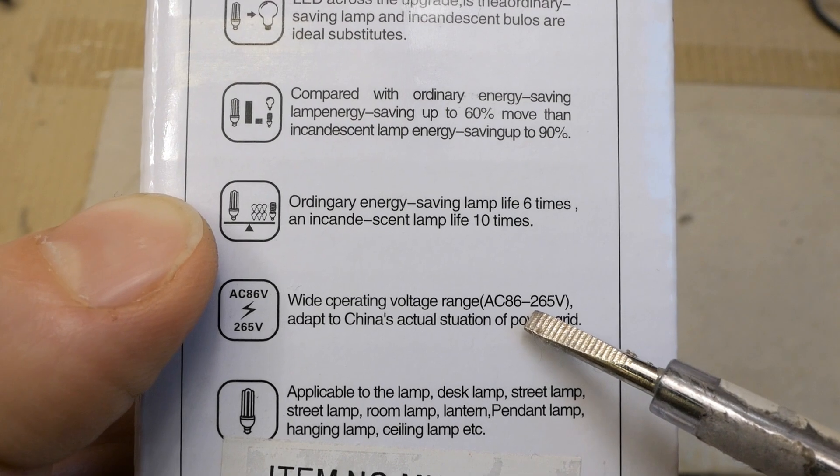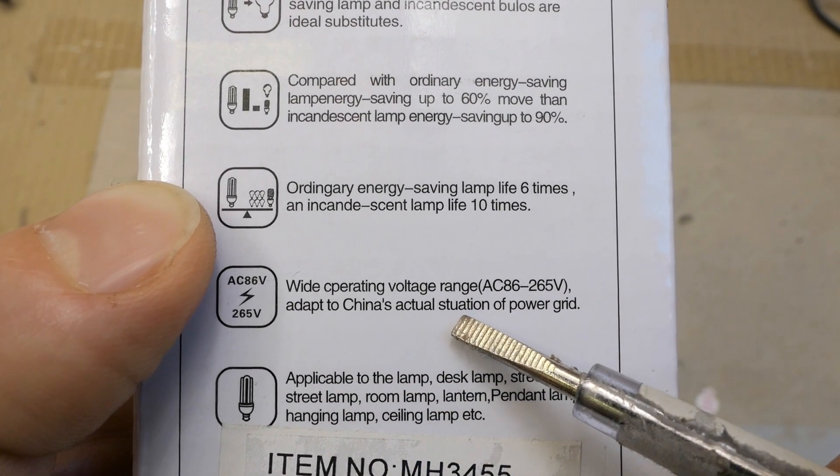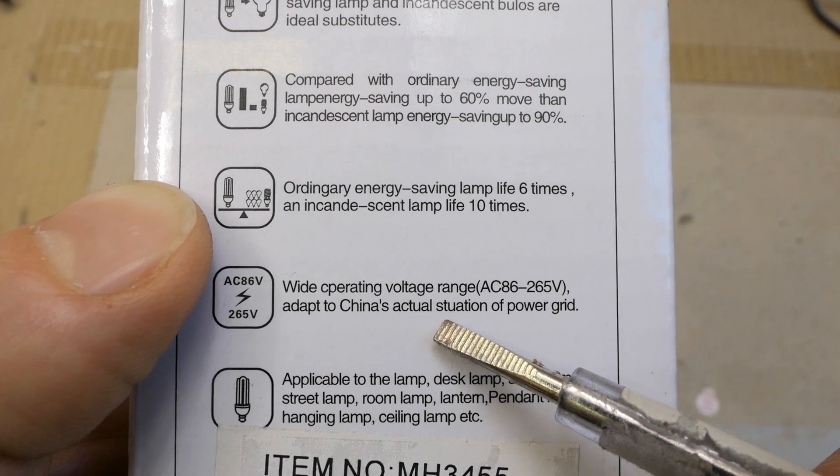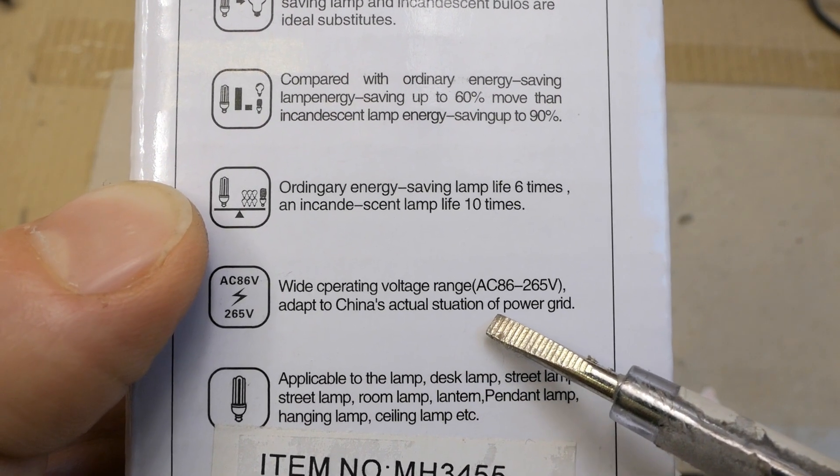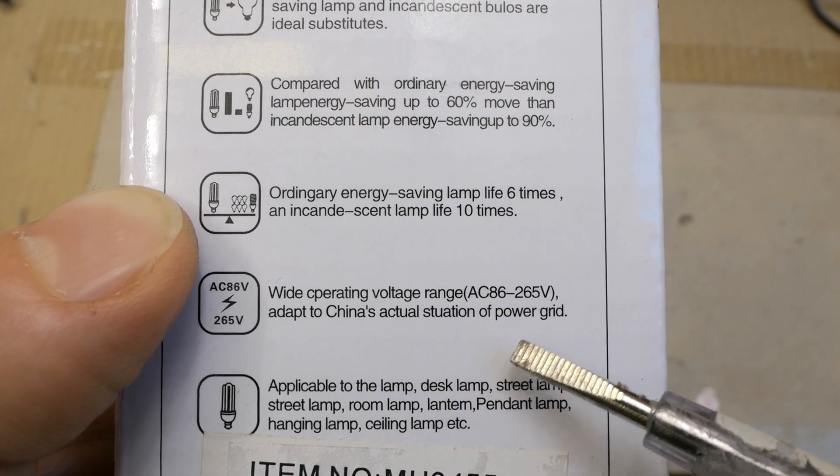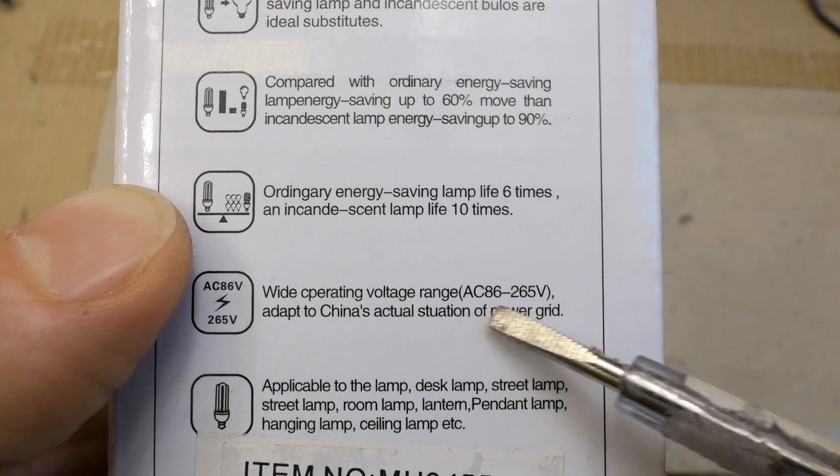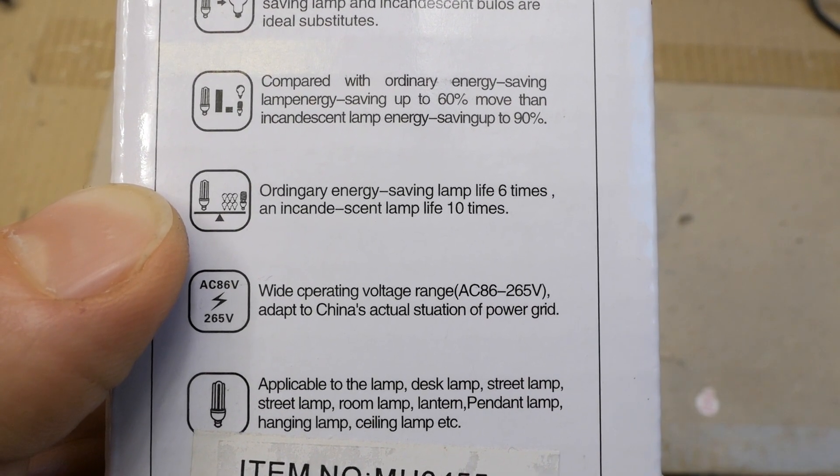AC 68 to 265 volts. Adapt to China's actual situation of power grid. It can adapt to China's actual situation of power grid. Does it mean that the Chinese power grid fluctuates anywhere between this and this? That's interesting.